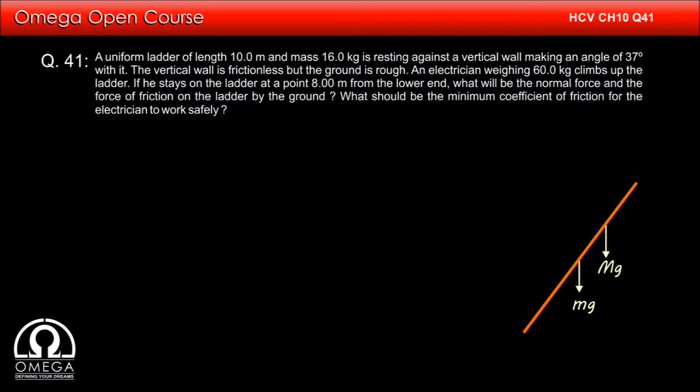If we assume the mass of the electrician to be M, then Mg acts on the ladder in vertically downward direction at a distance of 8 meters from the lower end.